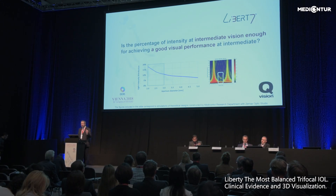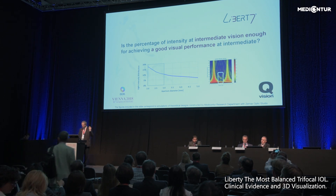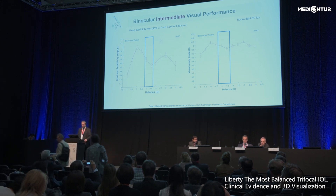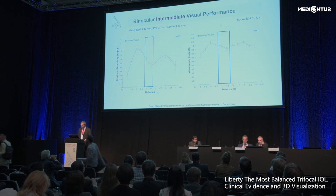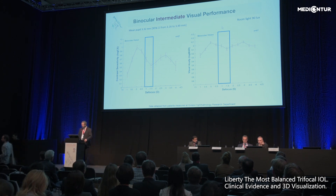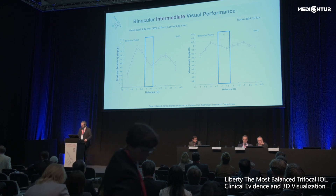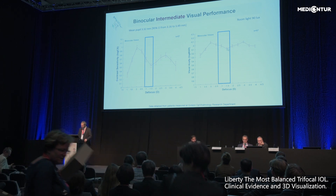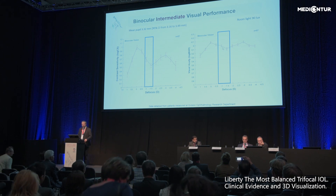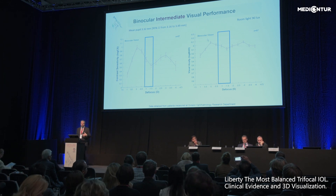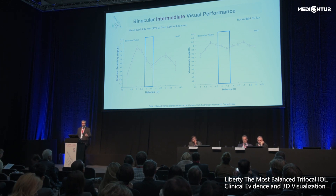But is the intermediate vision sufficient for our patients? When we go to the clinic, we can see the contrast sensitivity focus score and the visual acuity focus score in binocular. In a room with a mean pupil of 3.32 millimeters, we can see that in visual acuity at intermediate, we have at least 0.1 logMAR — approximately 20/25 — and 90% of binocular vision in our patients is satisfactory for a normal patient.